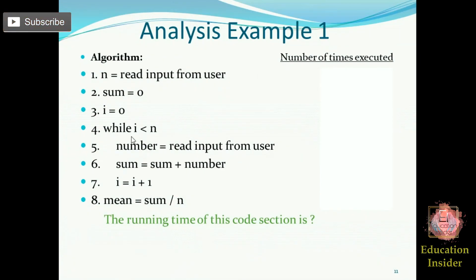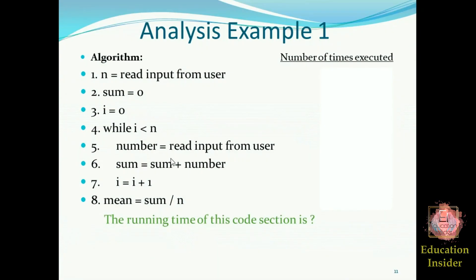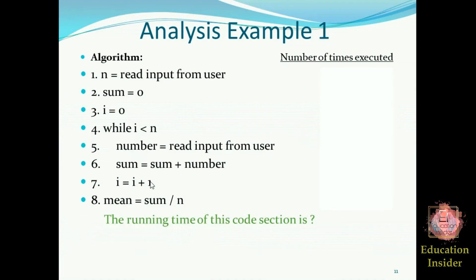At line 4, this is a while loop and it is going to run n times — from 0 to less than n, which means it will run n times and take n iterations to complete its execution. At line 5, it is an assignment statement but it will be running n times because it is under the influence of this while loop. The same applies to lines 6 and 7; these are also assignment statements under the while loop, so they will complete execution after running n times.